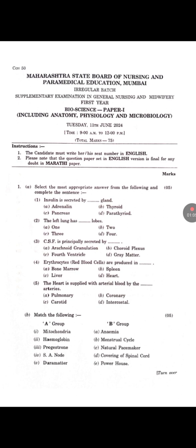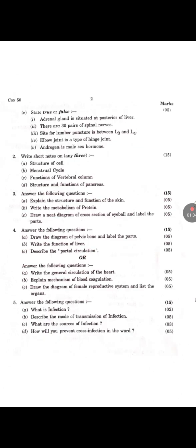Match the following: 1. Mitochondria — Powerhouse. 2. Hemoglobin — Anemia. 3. Progesterone — Menstrual cycle. 4. SA node — Natural pacemaker. 5. Dura mater — Covering of spinal cord.